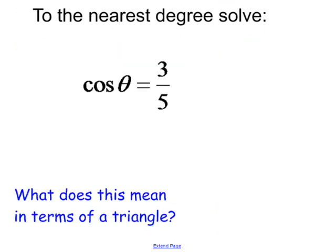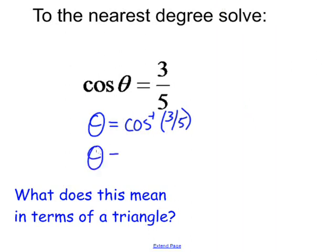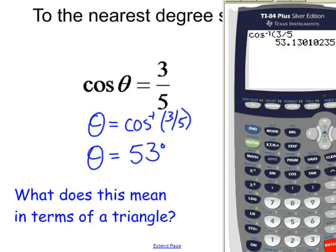Let's look at a basic problem. I want to find theta to the nearest degree if I know cosine of theta is three-fifths. Well, that's easy enough - all I have to do is take inverse cosine of both sides. I'll be left with theta on one side and I'll be left with inverse cosine of three-fifths. Go to my calculator, type in inverse cosine of three divided by five, hit enter, and you've got the answer.